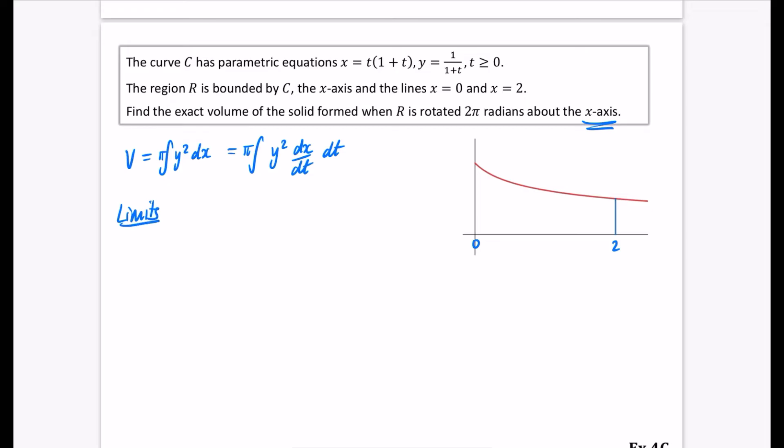So my limits, normally I would be doing it between 0 and 2. So I'm going to find out when x equals 0 what is t equal to? If x is equal to 0 we get 0 equals t(1+t). Which means that either t is equal to 0 or t is equal to minus 1. But t has got to be greater than or equal to 0. So t is equal to 0. So now I know that the bottom part of this is going to be a 0.